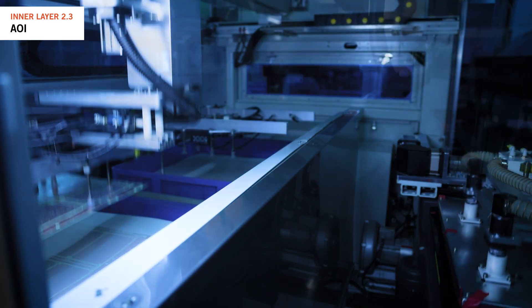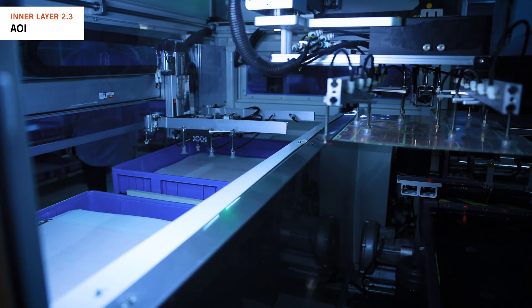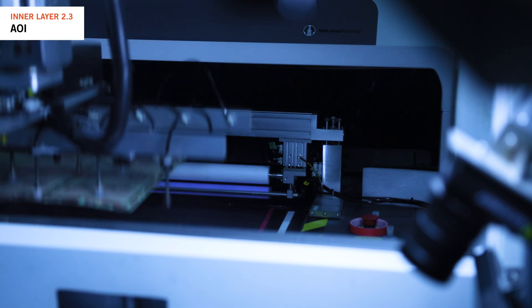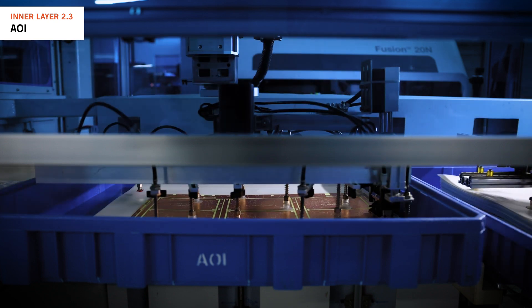The first stage of AOI involves the machine scanning the cores comparing the scanned image to the customer's Gerber data. AOI identifies errors or faults preventing the use of flawed inner layers in the production of the circuit board moving forward.